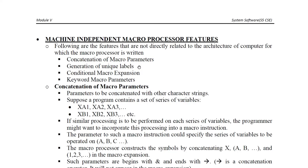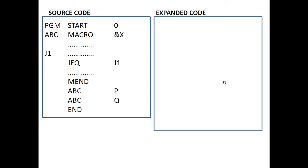The second machine independent feature is generation of unique labels. The source code starts with PGM START 0 and END. In between, there is a macro called ABC with a single parameter X, containing a macro body, and MEND as the macro end statement.